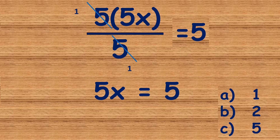In our alternatives, a is equals to 1, b is equals to 2, and c is equals to 5. So the correct answer for 5x is equals to 5. Remember, we are not solving for x — if we were solving for x, x would be equals to 1, because 5x being equals to 5 means x would be 1. But we need to remember that we are solving for 5x, and 5x is equals to 5.